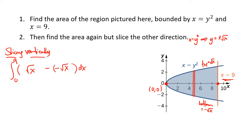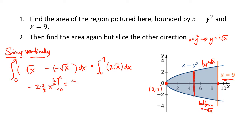So we're computing the integral from 0 to 9 of 2 times the square root of x dx. Writing the square root of x as x to the 1/2, we take the antiderivative: the 2 stays, we raise the power to 3/2, and divide by 3/2, which is the same as multiplying by 2/3. Plugging in 9 and 0 and subtracting gives us 4/3, and 9 to the 3/2 is 27, so 4/3 times 27 equals 36.